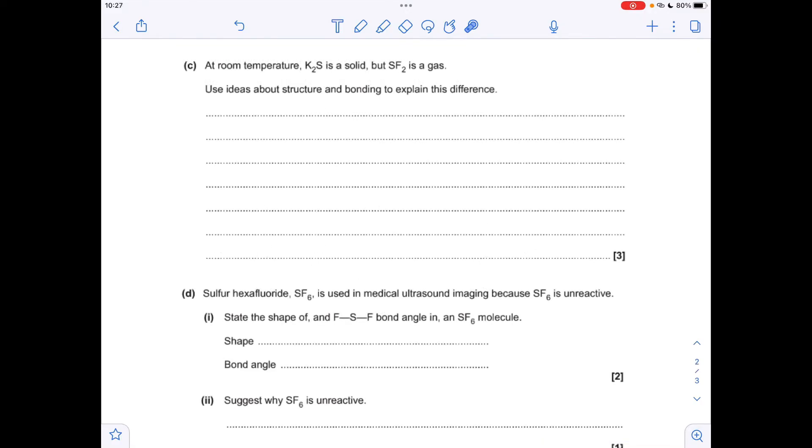Moving on to part C. We've got to talk about bonding and structure to explain these different physical states of potassium sulphide and sulphur difluoride. First thing, potassium sulphide has a giant ionic lattice structure. Why is it a solid? A large amount of energy is needed to break the strong attractions between the oppositely charged ions.